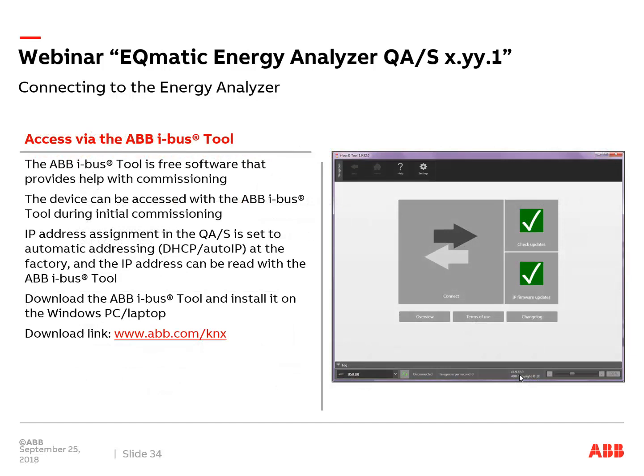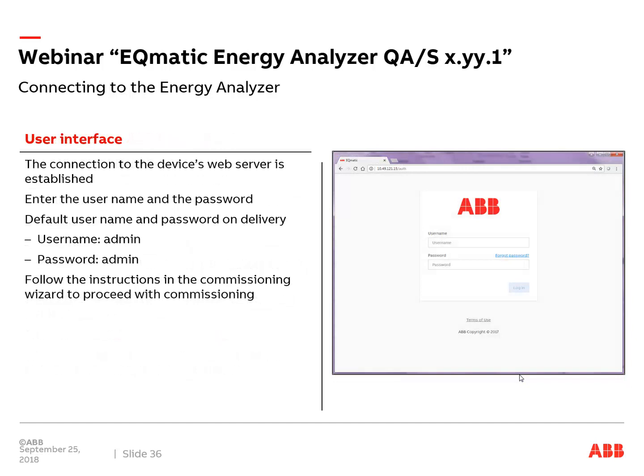To read out the IP address, use the ABB IBUS tool, which is used for KNX devices for diagnostics and commissioning. Last week we also launched a new version of the IBUS tool — version 1.9.34.0. You can download the latest version from our website. New features include the ability to change the color theme — for example, switching between dark and light mode.